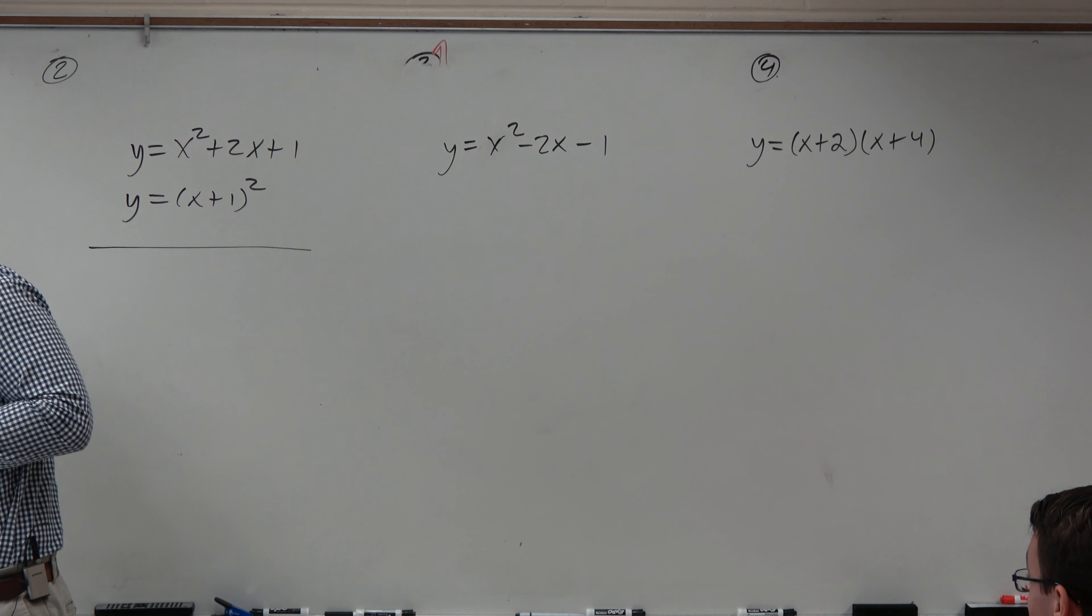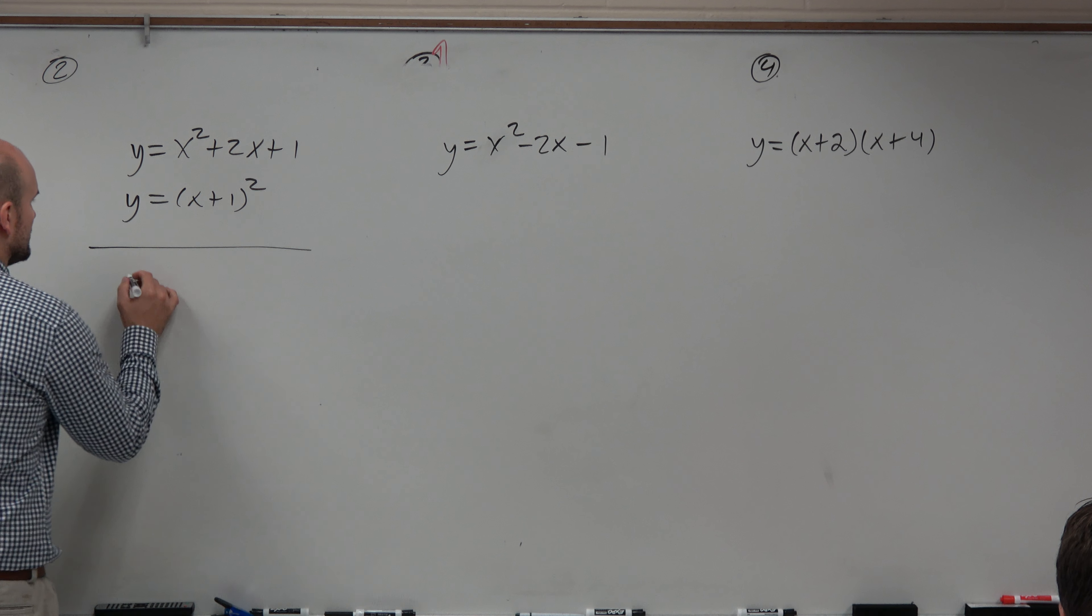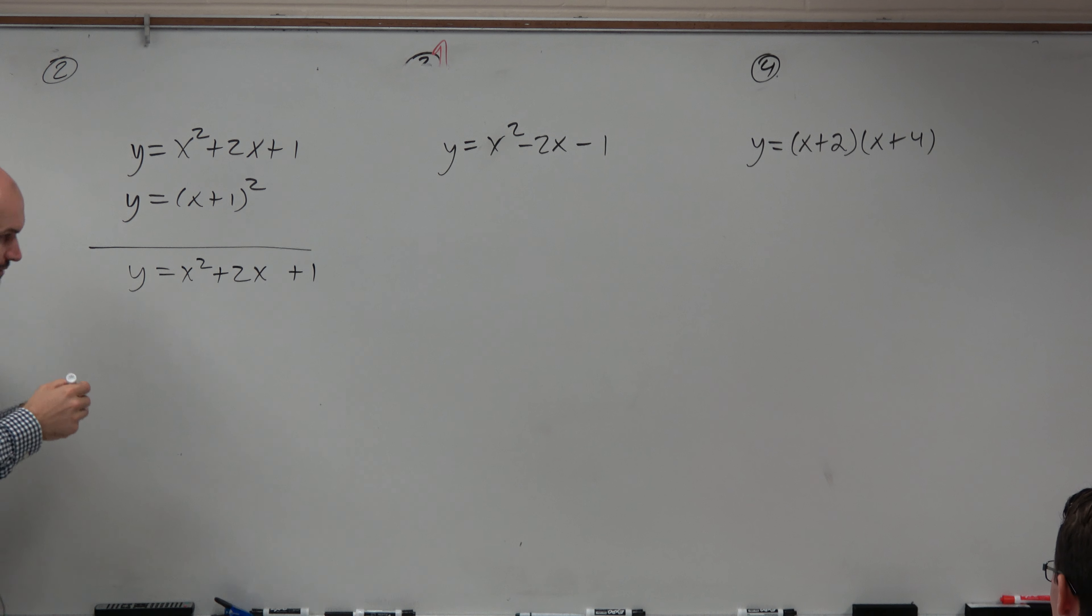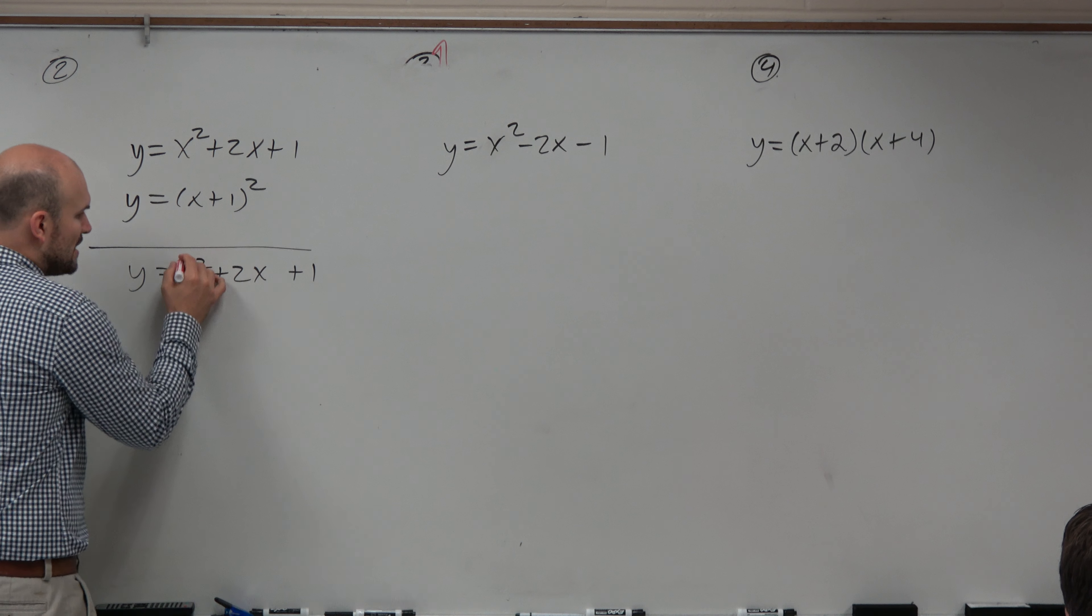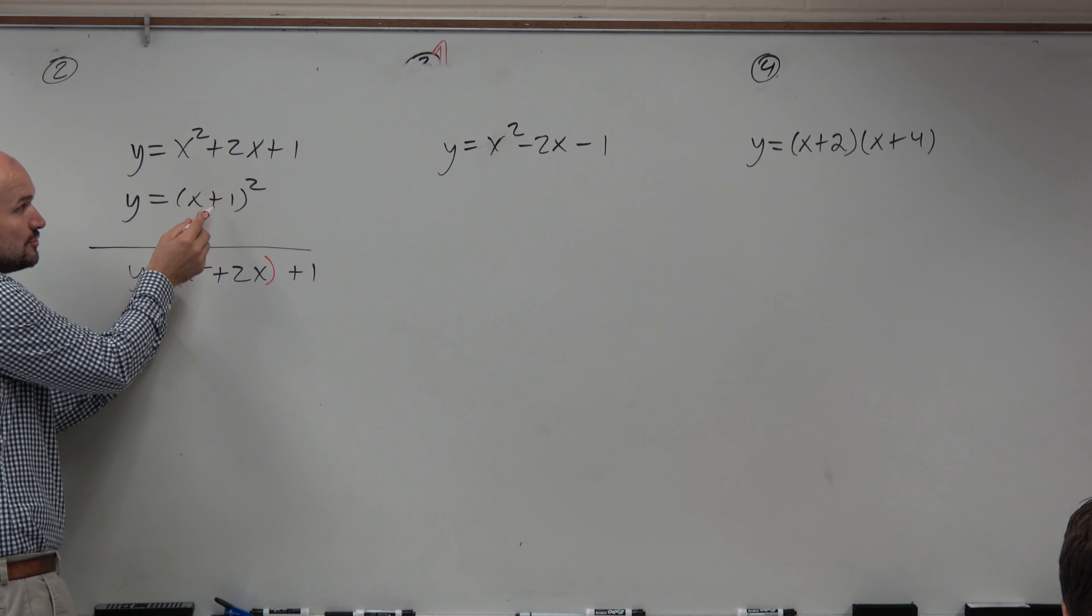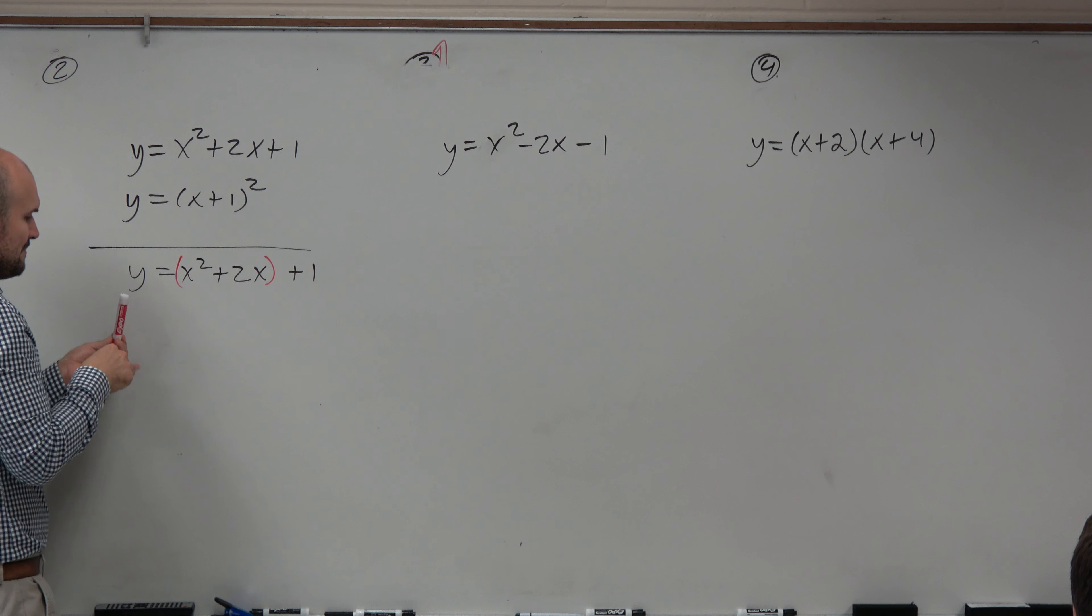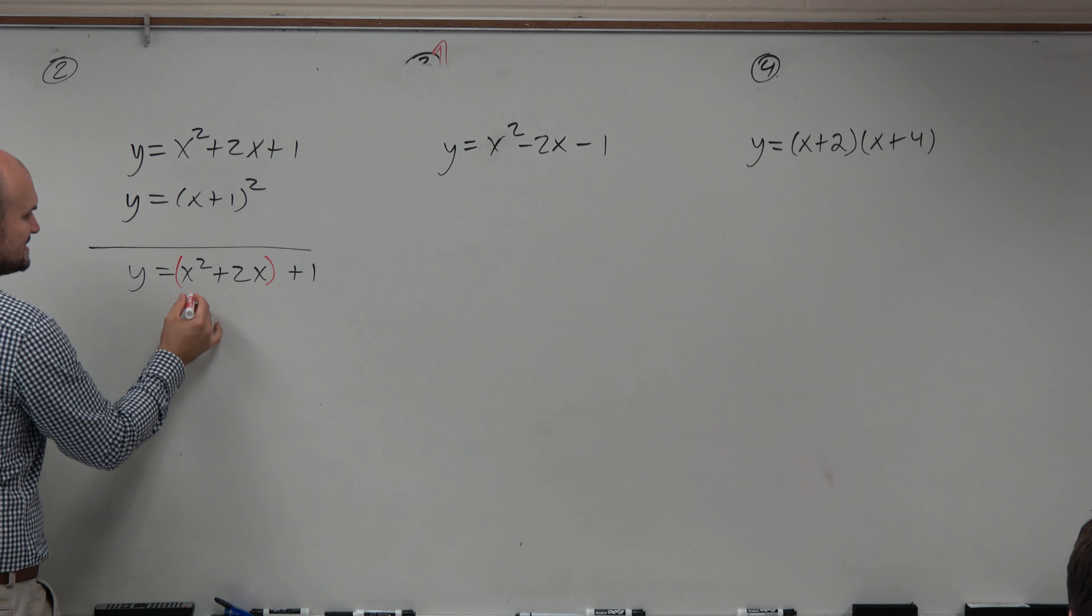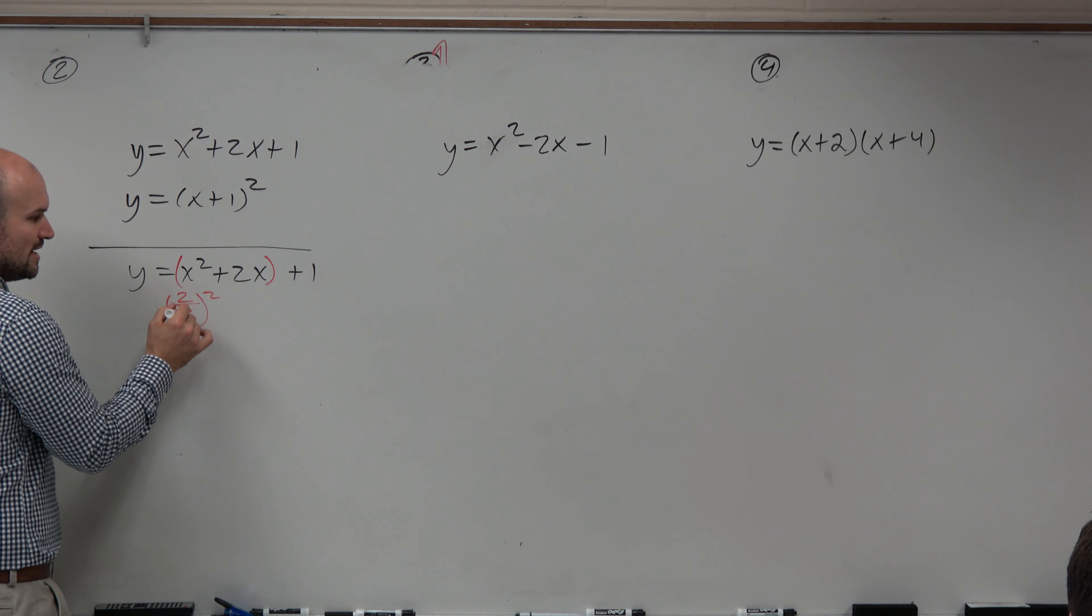But let's go ahead and do the process. The process is we're going to put parentheses around our first two terms. What we're trying to achieve here is we already had a perfect square trinomial. We got lucky, that's really not going to happen. But I did that because that's actually what we're trying to achieve every single time when we complete the square. We're trying to create something that we can factor to a binomial squared. This example, I just gave it to you from the beginning. So how do we create a perfect square trinomial every time? What do we do? Second step is to take the middle term b, divide by 2, and square it. 2 divided by 2 squared is 1.